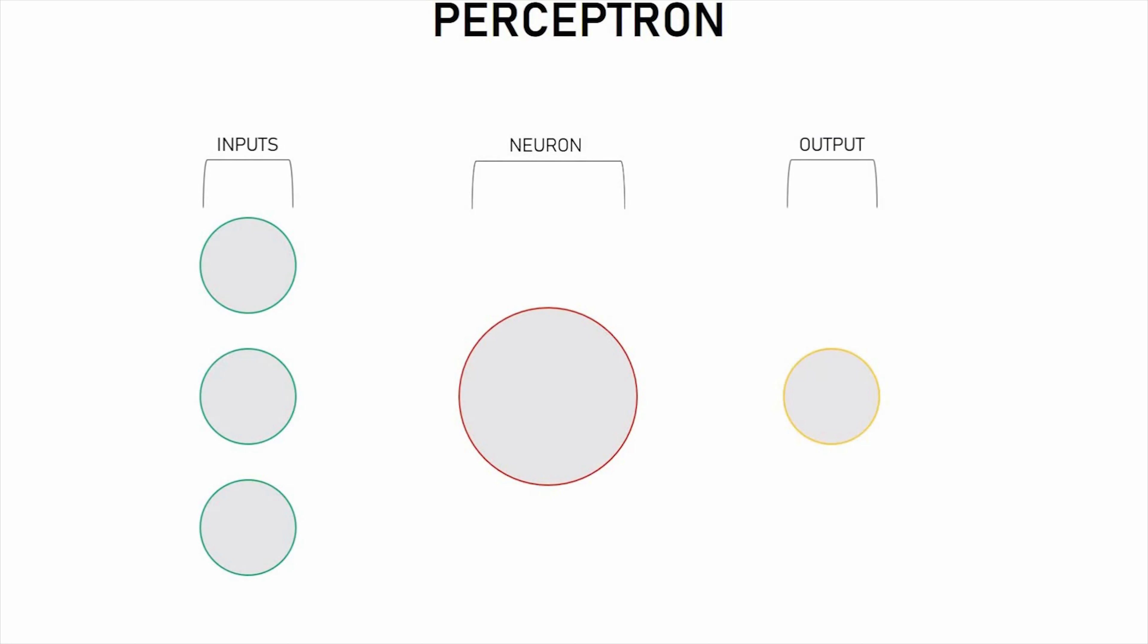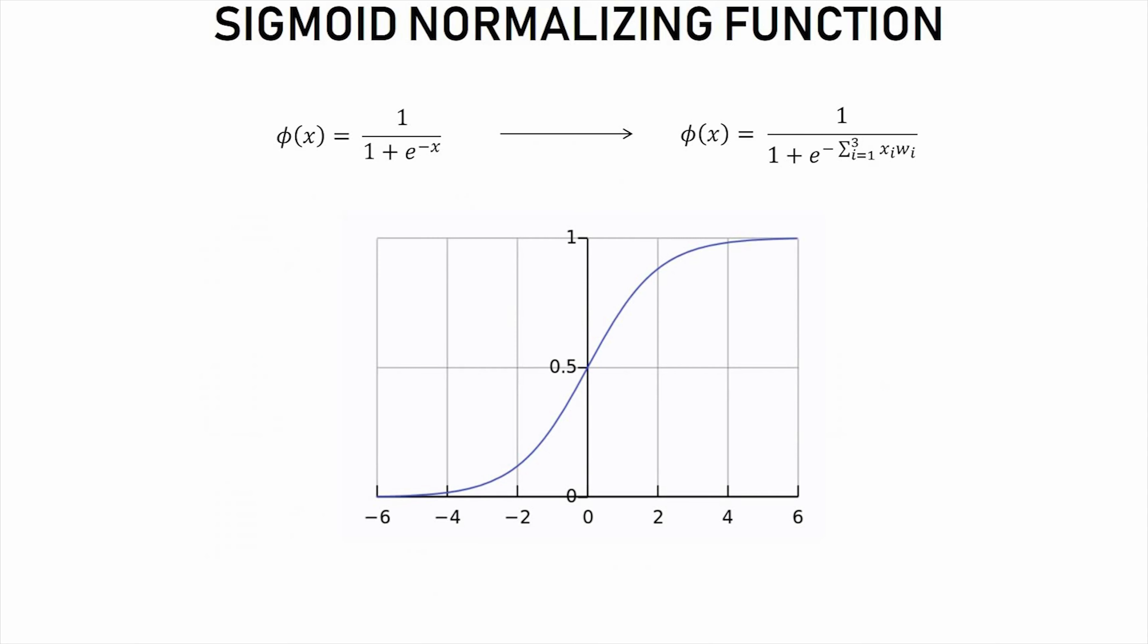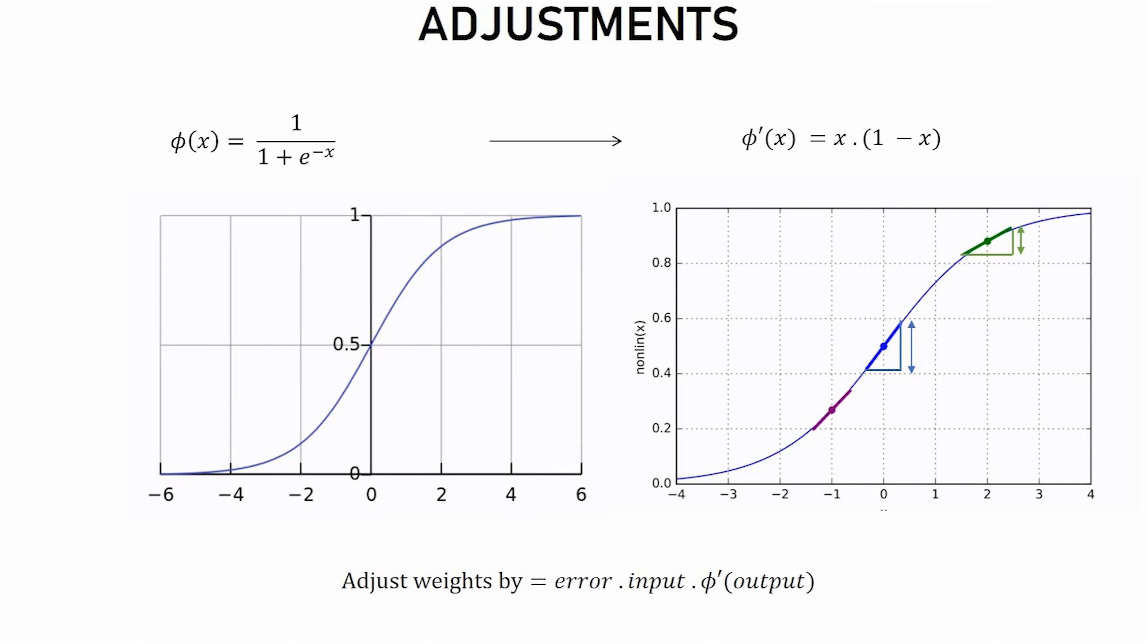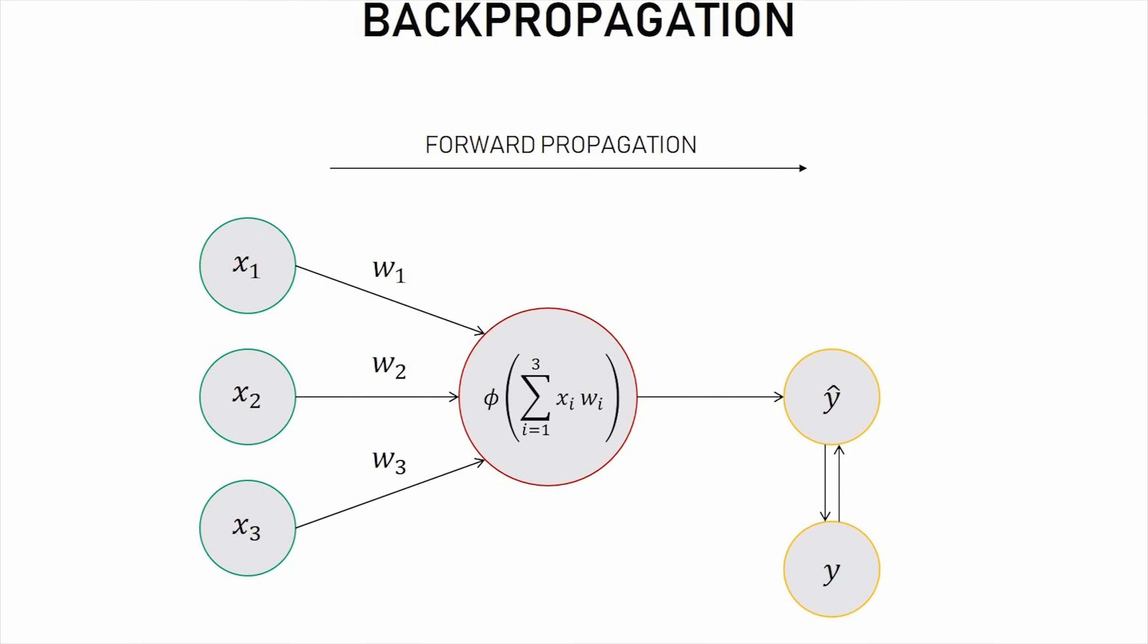Each connection, like the synapses in a biological brain, can transmit a signal to other neurons. An artificial neuron receives a signal, then processes it, and can signal neurons connected to it. In the late 1940s, psychologist Donald Hebb created a hypothesis of learning based on the mechanism of neuroplasticity.